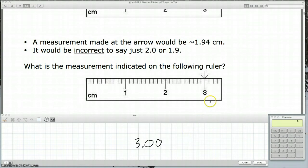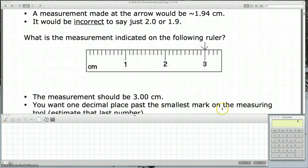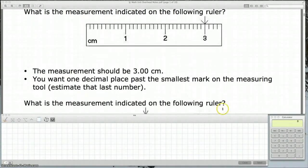What we want to do is you always want to estimate that last number. And if you look at the ruler, these are tenths. So this is 2.1, 2.2. Each little mark is a tenth. We always want to go one decimal place past the smallest mark on the ruler. So if the smallest mark on the ruler are tenths, we're going to estimate to the hundredths place.